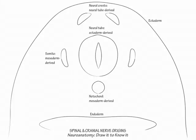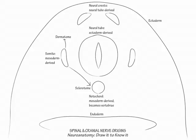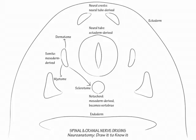Choose a somite mass and draw three arrows from it. Direct one to the notochord and label it sclerotome — the sclerotome differentiates into bone, and the sclerotome around the notochord becomes vertebral bone. Draw another arrow dorsally to the surface of the embryo and label it dermatome, which derives the dermis, the skin layer underlying the epidermis. Direct the last arrow laterally to form myotomal masses, which derives skeletal muscle. An artery and nerve pair corresponds to each somite segment, and wherever the products of that somite travel, its nerves and arteries follow.